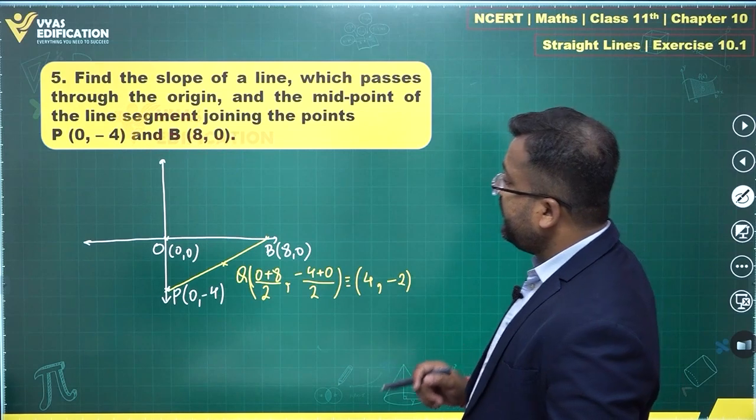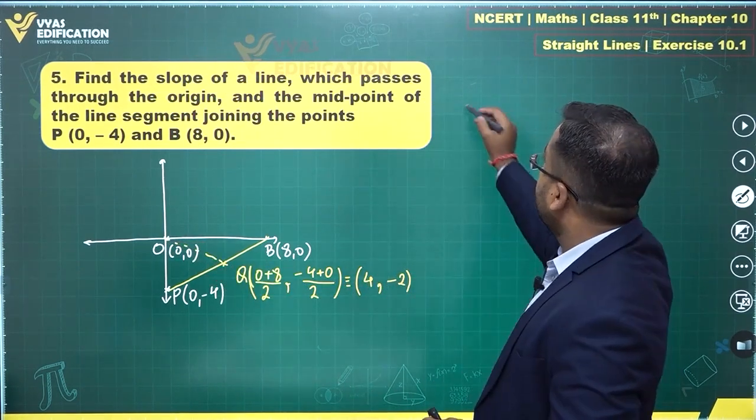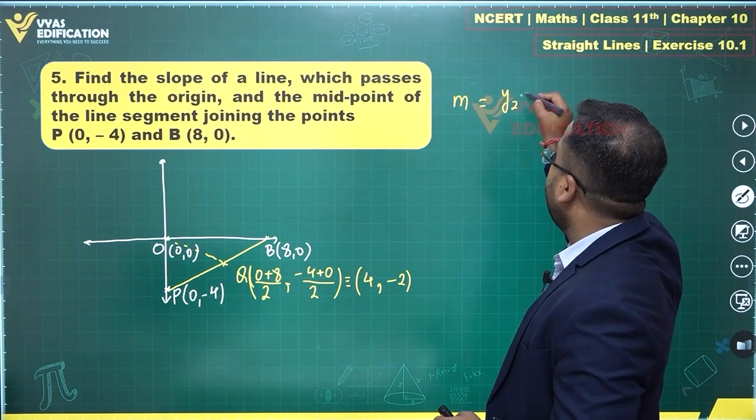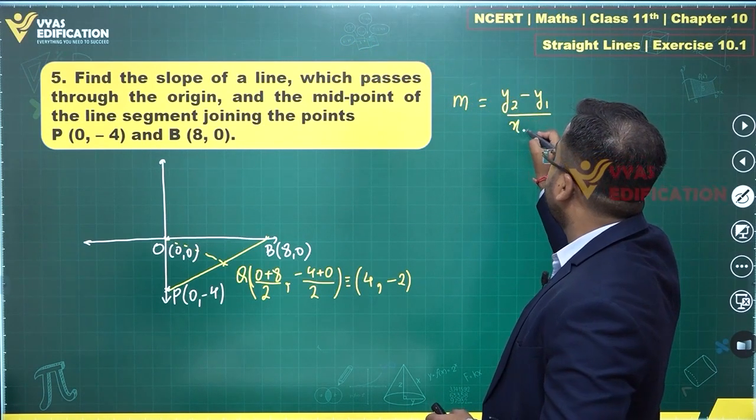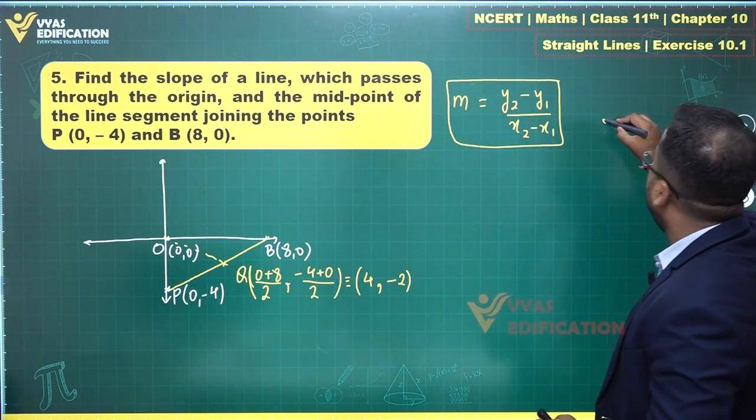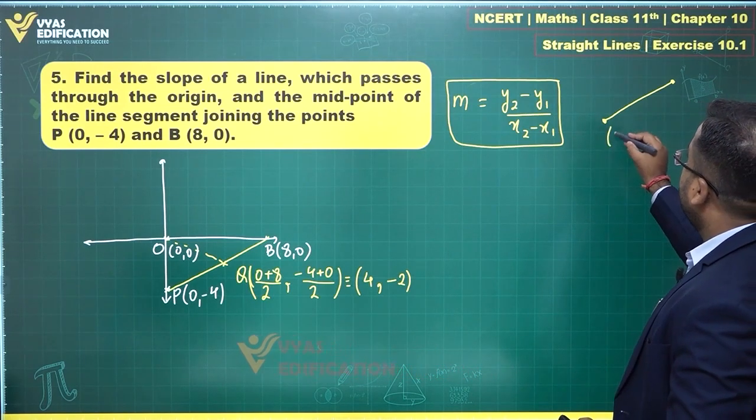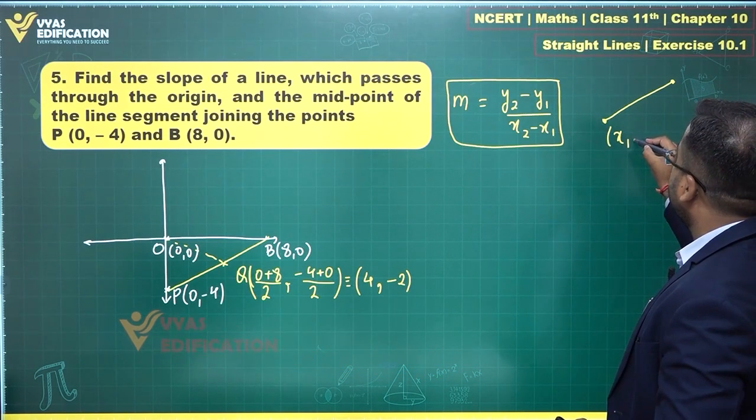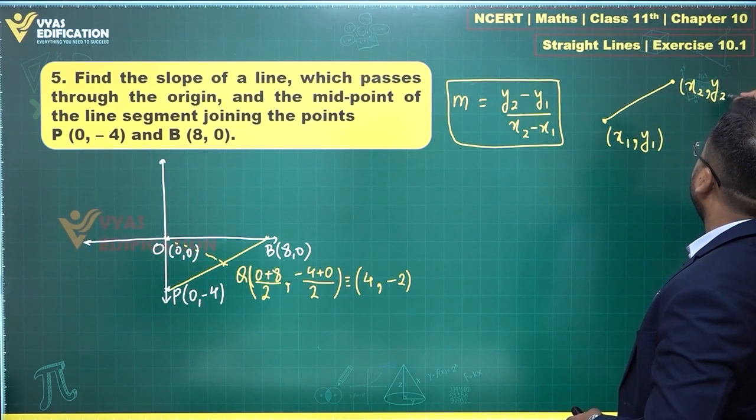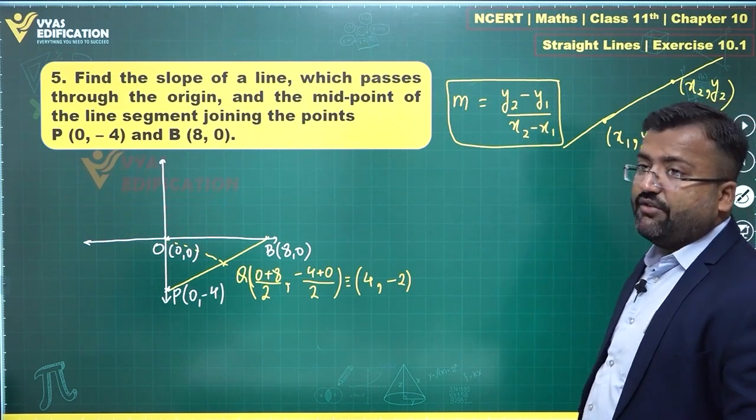We are asked to find the slope of this particular line joining this and this. So slope of any line is actually equal to Y2 minus Y1 upon X2 minus X1 for any line passing through X1, Y1 and X2, Y2. If this is a line, the slope is given by this formula.